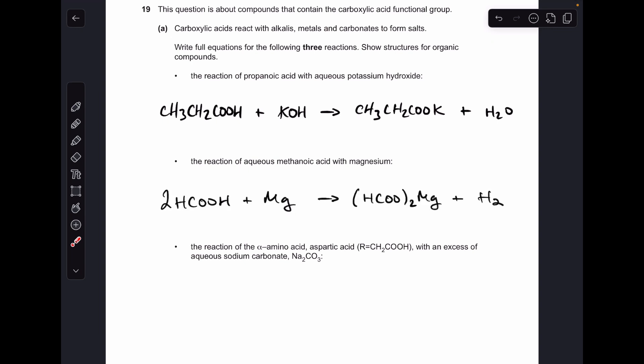There's the second one. Just be careful, magnesium forms a 2 plus ion, whereas this methanoate ion here is just 1 minus. So we need two of those for the magnesium, and we also make hydrogen in this reaction, not water.